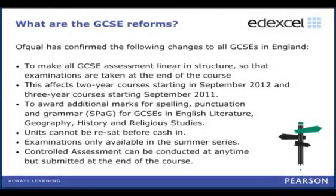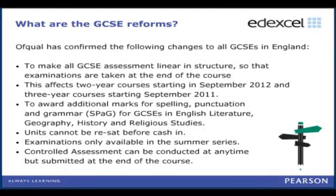So what are the GCSE reforms? The reforms result from various changes that Ofqual have confirmed. The first bullet is all about going linear in structure — the examinations will now have to take place at the end of the GCSE course. At the moment, students can undertake assessments in Year 10 and then do further assessments at the end of Year 11. With the new linear GCSE for first teaching from 2012, this will no longer be possible. All examinations will have to take place at the end of the two-year course, though controlled assessments will be slightly different.